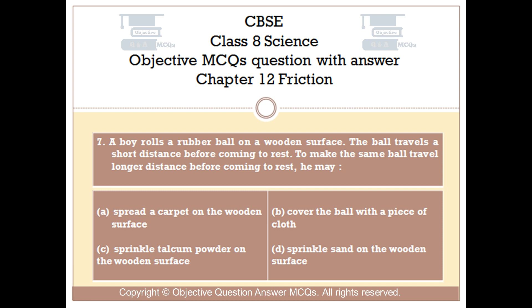Question number 7. A boy rolls a rubber ball on a wooden surface. The ball travels a short distance before coming to rest. To make the same ball travel a longer distance before coming to rest, he may: Option A: Spread a carpet on the wooden surface. Option B: Cover the ball with a piece of cloth. Option C: Sprinkle talcum powder on the wooden surface. Option D: Sprinkle sand on the wooden surface.